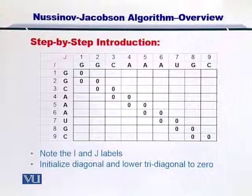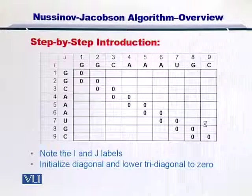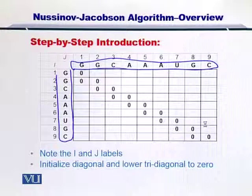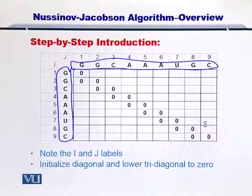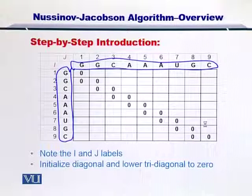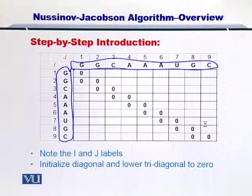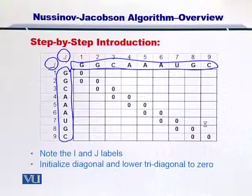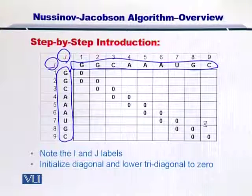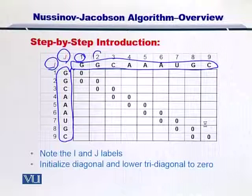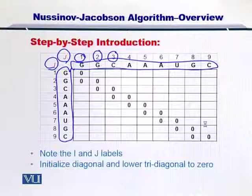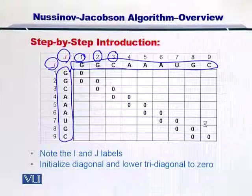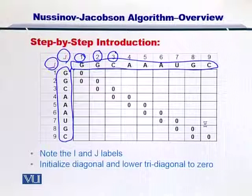In the NJ algorithm, we're going to create a matrix and place the RNA sequence on top as well as on the left. The left side is labeled as I and the top is labeled as J. Each index of the nucleotide is written on top of the nucleotide for ease in calculation.